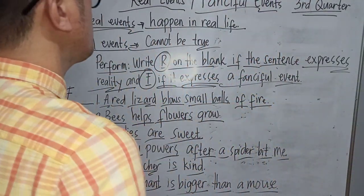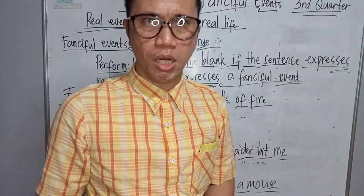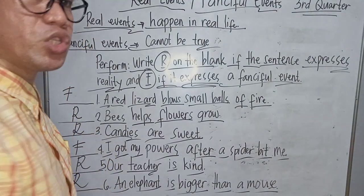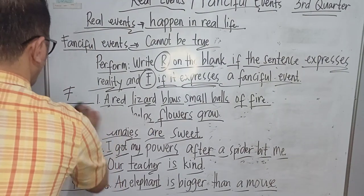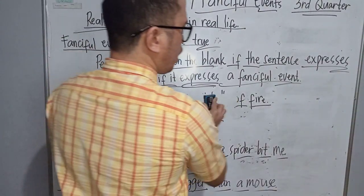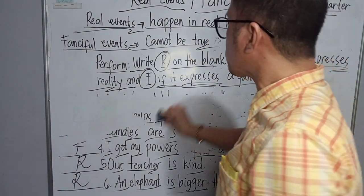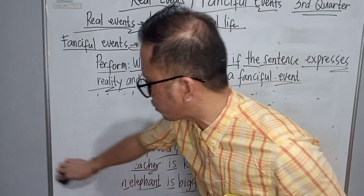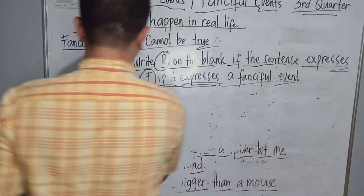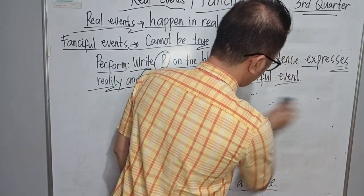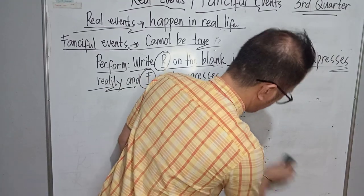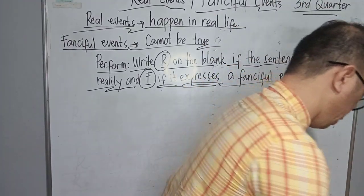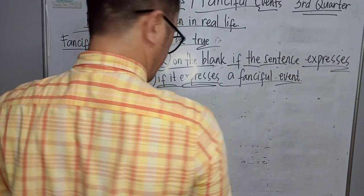That is how you distinguish real events from fanciful events — this is a third quarter lesson in Language. We are going to proceed to numbers seven through ten. Remember, my dear students, to read each sentence carefully, comprehend the words being read, and review before you submit your answer to your teacher.